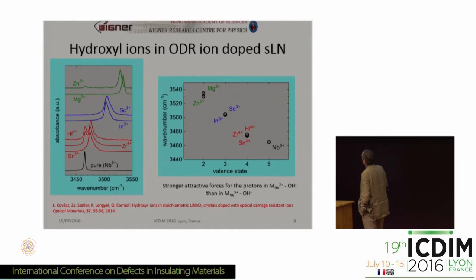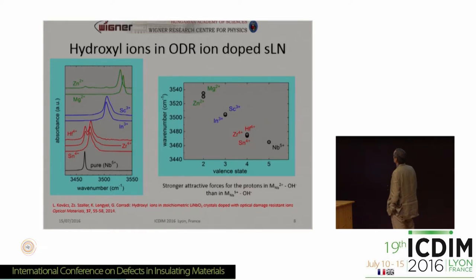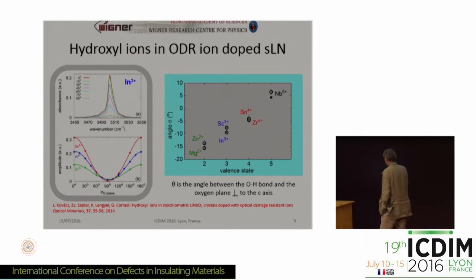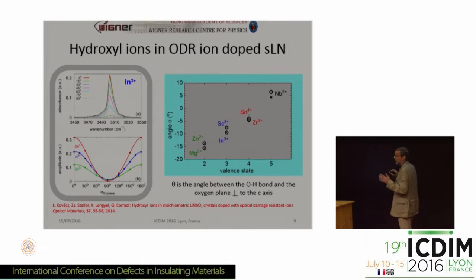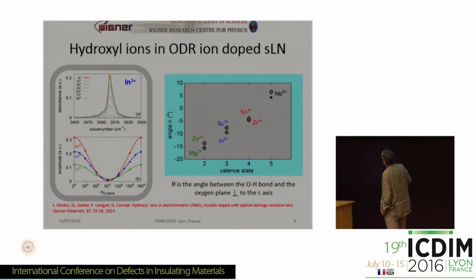In the case of trivalent dopants, this band is shifted. And in the case of tetravalent dopants, this is shifted again. If we plot the vibrational frequencies as a function of the valence state of the dopant ions, we see a nearly linear dependence. By measuring the OH absorption as a function of the light polarization, we can see that the OH bond is nearly perpendicular to the ferroelectric C-axis, but not completely — there is an angle between the OH dipole and the oxygen plane perpendicular to the ferroelectric axis, and this angle also depends on the valence state of the dopant.